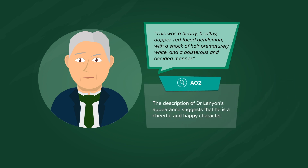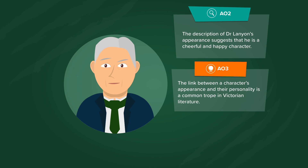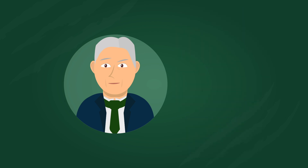The description of Dr Lanyon's appearance suggests that he is a cheerful and happy character. The link between a character's appearance and their personality is a common trope in Victorian literature — a trope being something that recurs or repeats throughout literature. Dr Lanyon reveals that he no longer sees Henry Jekyll very often because he feels that Henry Jekyll has become too fanciful and has gone wrong in mind.